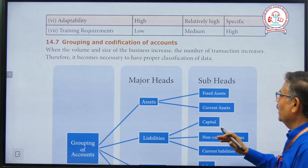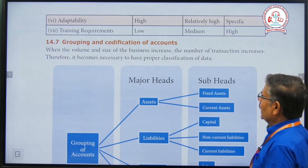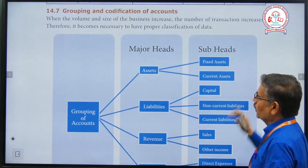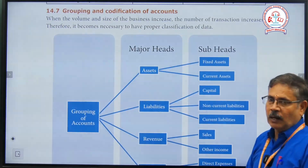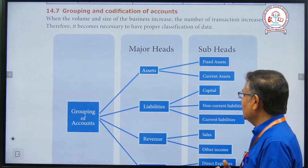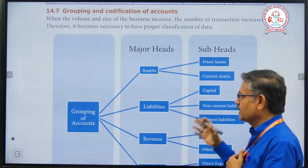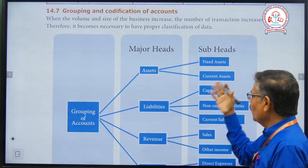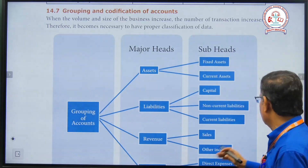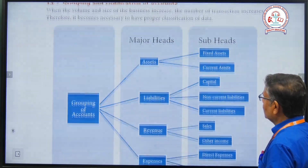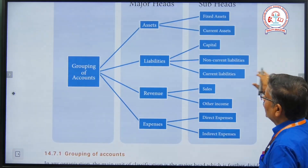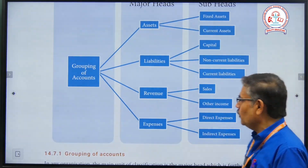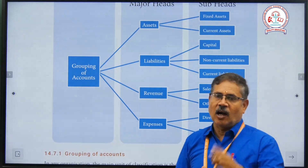The next topic is grouping and codification. Under codification, we have a code group with major heads and sub-heads. The first major heads are the headings of assets, liabilities, revenue, and expenses.